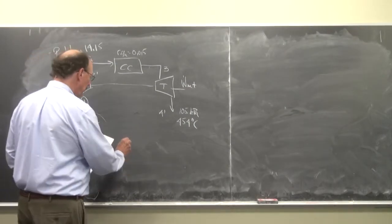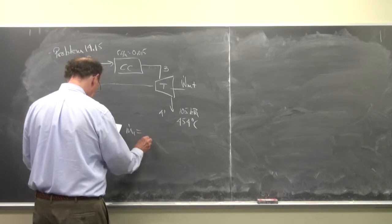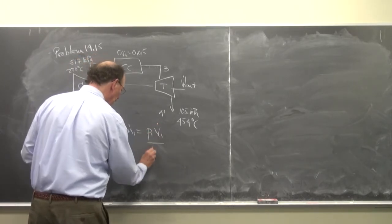So, in calculating the mass flow rate, we use the ideal gas law, so m dot 1 is equal to P1 V1 dot over R T1.